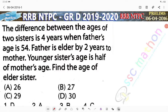Hello everyone, welcome back. This problem is from 2016: The difference between the ages of two sisters is four years. When father's age is 54, one sister is S and the other is S plus 4. Father is elder by two years to mother, so mother's age is 52.